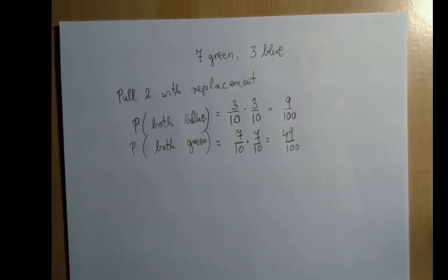What about the probability of both of them green? That's the same idea, 7 out of 10 for the first, and because of replacement, 7 out of 10 for the second one.